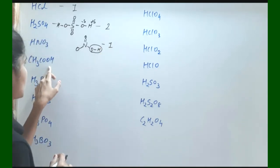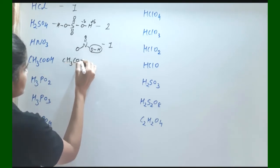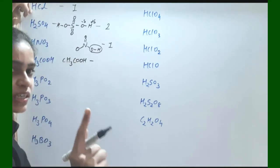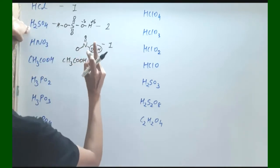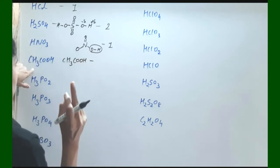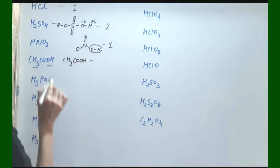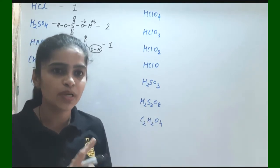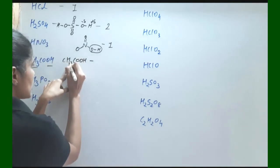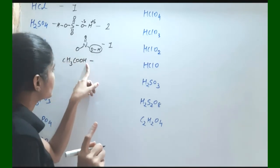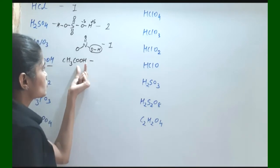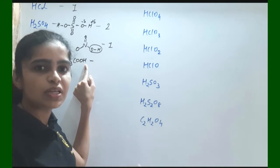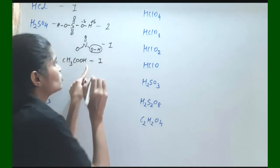Next is CH₃COOH. You might think: 1 H present — basicity 1; 2 H present — basicity 2; so 4 hydrogen present total means basicity 4. No, basicity is not 4. Because these 3 hydrogens are combined with carbon, and only this one hydrogen is combined with oxygen. Only the hydrogen bound to oxygen is loosely bound and easily replaceable by base. So its basicity is equal to 1.